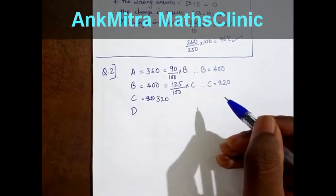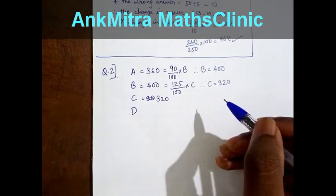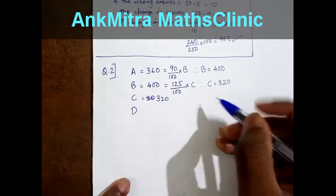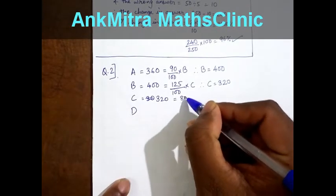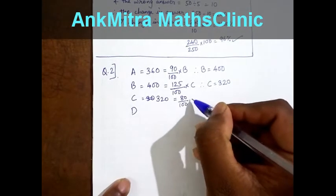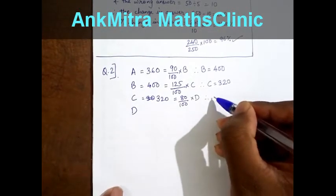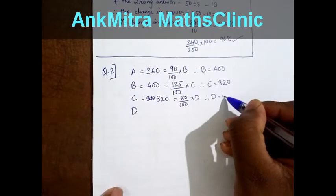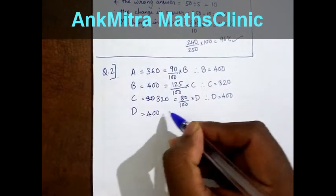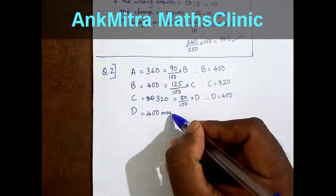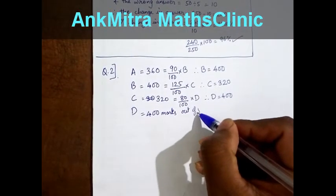Now they are also given that C has scored 20% less than D. That means C's marks of 320 are 80% of D's marks. Therefore we get D's marks as 400. Therefore D is equal to 400 marks out of 500.